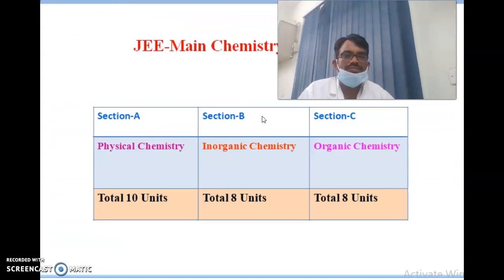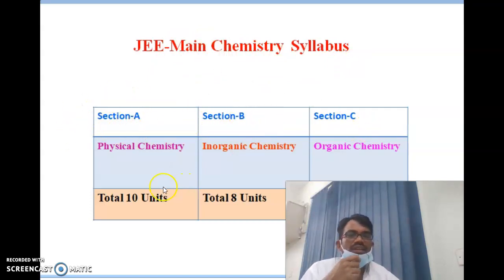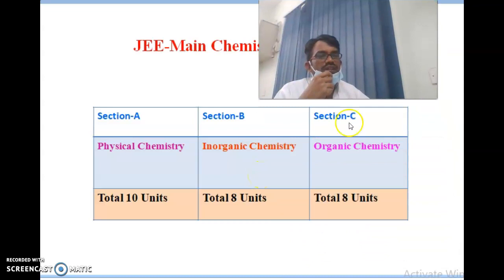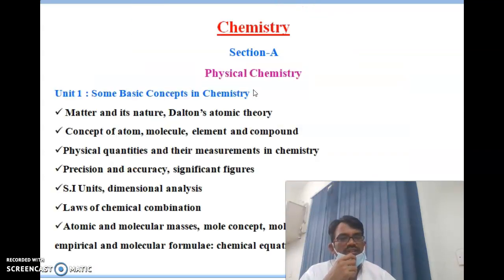Looking at the paper pattern, the JEE Main Chemistry syllabus has three sections: Section A deals with physical chemistry, Section B is inorganic chemistry, and Section C is organic chemistry. Physical chemistry has 10 units, inorganic chemistry has 8 units, and organic chemistry has 8 units. It's important to keep this mind framework in place for the entrance exam.